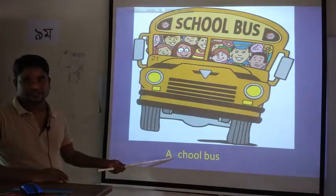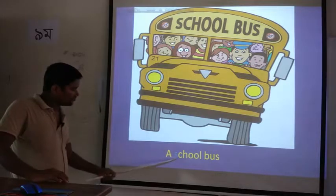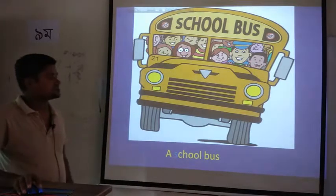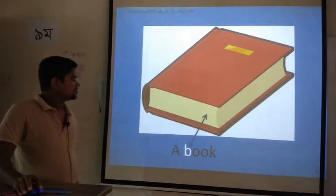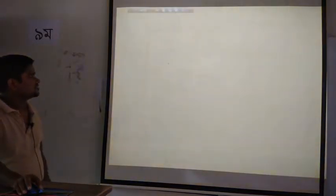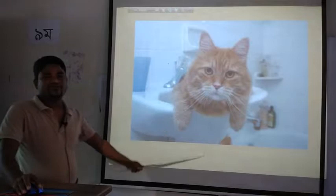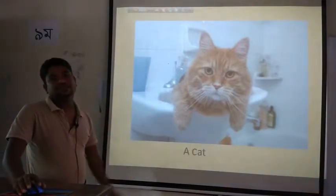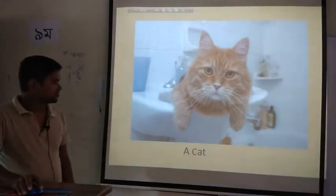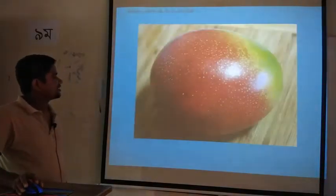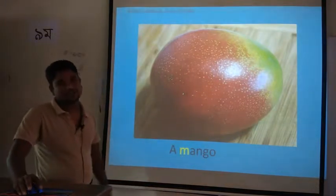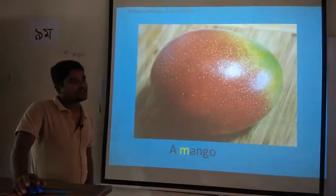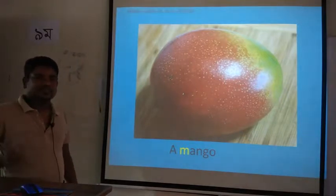S is a consonant, so words beginning with S take article A. Similarly, B is a consonant. And this is the picture of a mango — M is also a consonant. So every word that begins with a consonant will take A as its article.